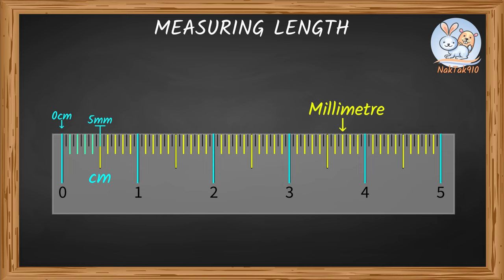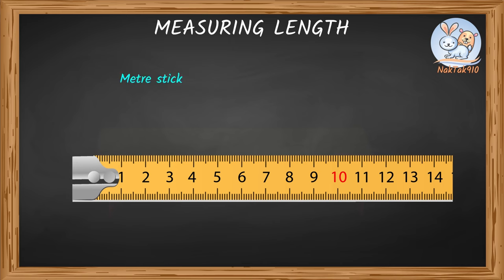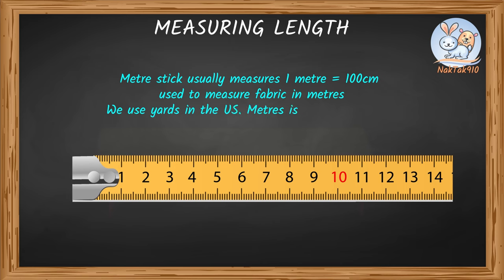but how do I measure meters? There is a meter stick to measure a meter. A meter stick usually measures 1 meter, which means 100 centimeters. These are usually used to measure fabric in meters. We use yards in the US. Meters is in the metric system.